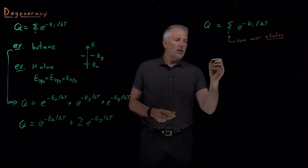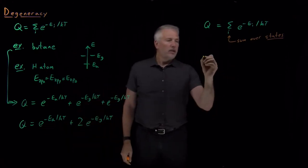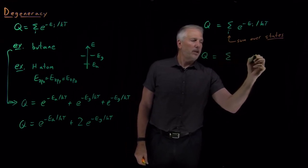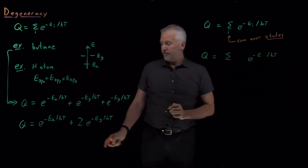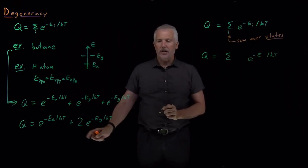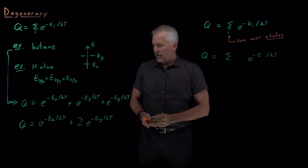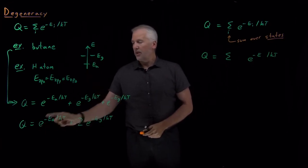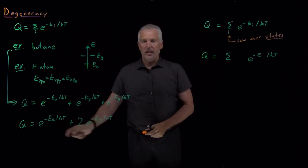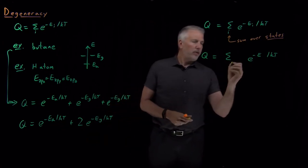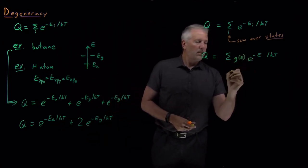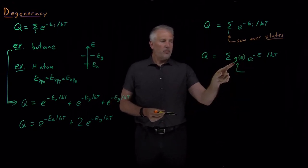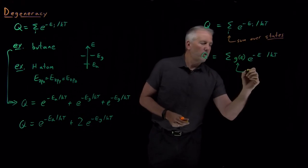Or, if we think about a sum that would correspond to that second way of writing things, if I want to sum e to the minus energy over kT, sometimes having a pre-factor in front—what this factor means is there's a two here because there's two states that have that energy. There's a one here because there's only one state with that energy e anti. So if I write this term g sub e, that's a quantity we'll call the degeneracy.